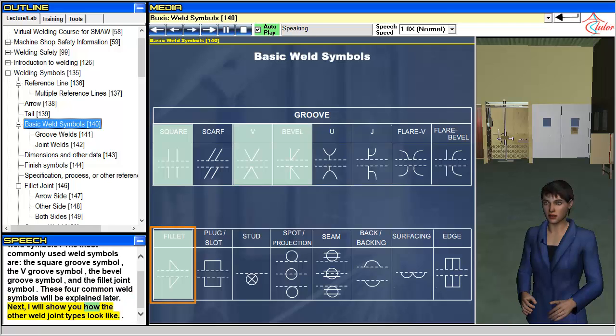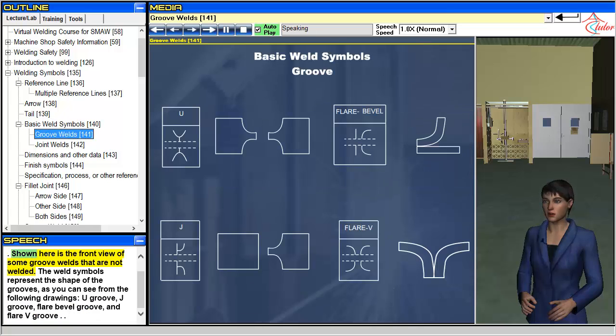Next, I will show you how the other weld joint types look like. Shown here is the front view of some groove welds that are not welded. The weld symbols represent the shape of the grooves, as you can see from the following drawings: U-groove, J-groove, flare bevel groove, and flare V-groove.